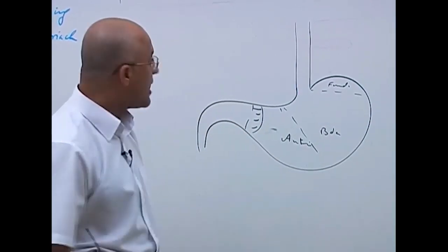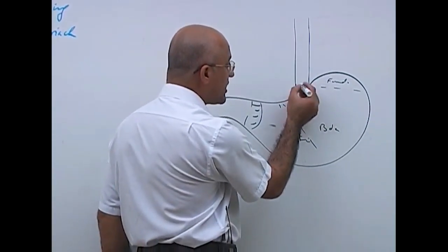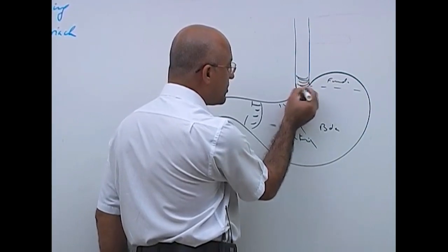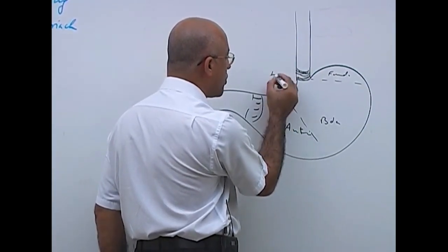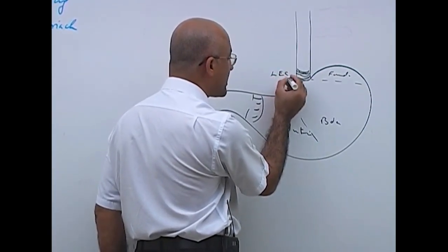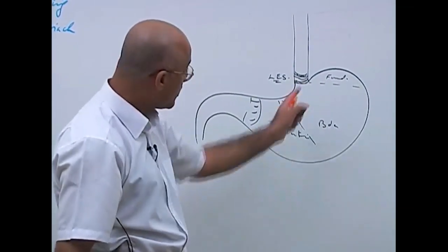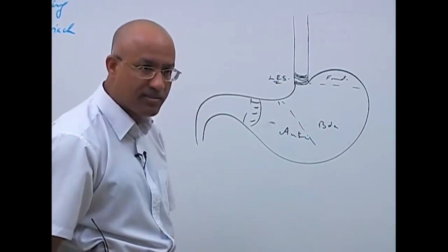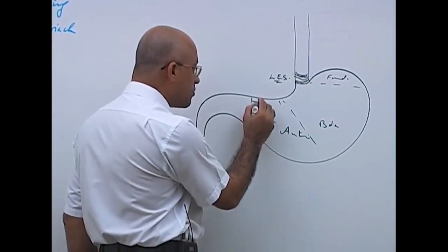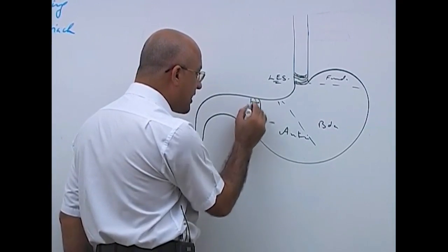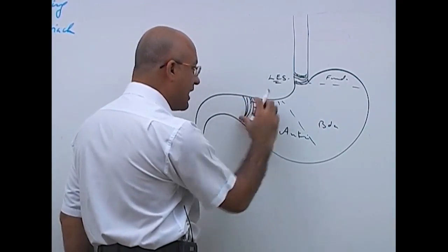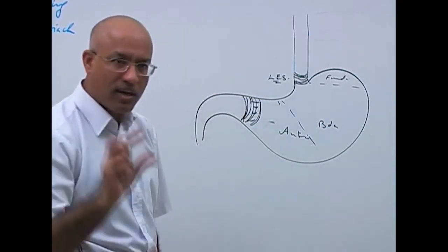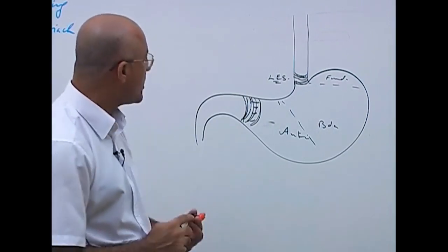The area where the stomach connects with the esophagus has the lower esophageal sphincter, which is normally closed to prevent reflux. Similarly, the smooth muscle layer in the pylorus is also thickened and tonically almost closed.